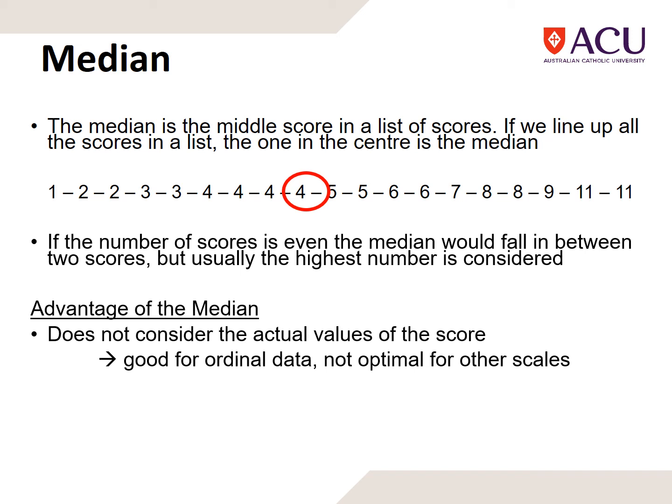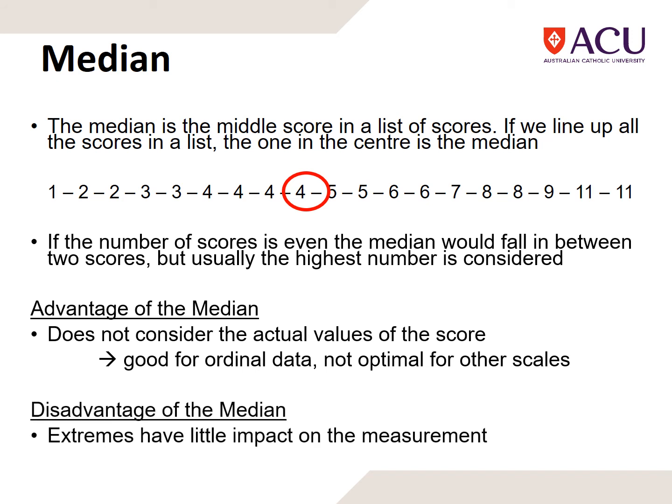An advantage of the median is that it gives an actual value, beyond just sensitivity to outliers. It's good for ordinal data, but it's also not optimal in some considerations. A major disadvantage is that extremes have little impact—that lack of sensitivity to outliers can sometimes be an advantage, sometimes a disadvantage.